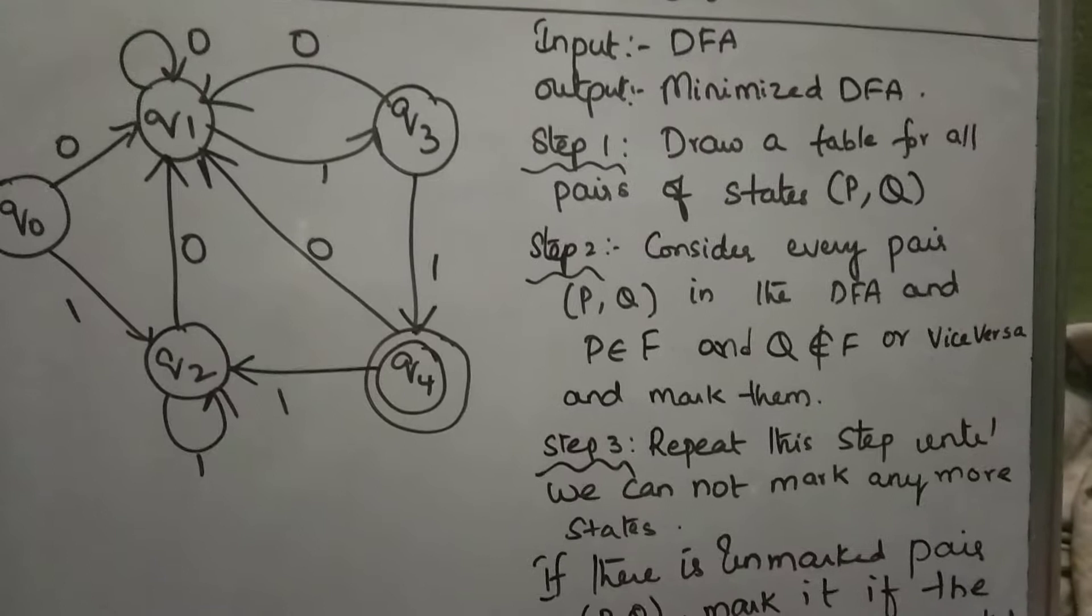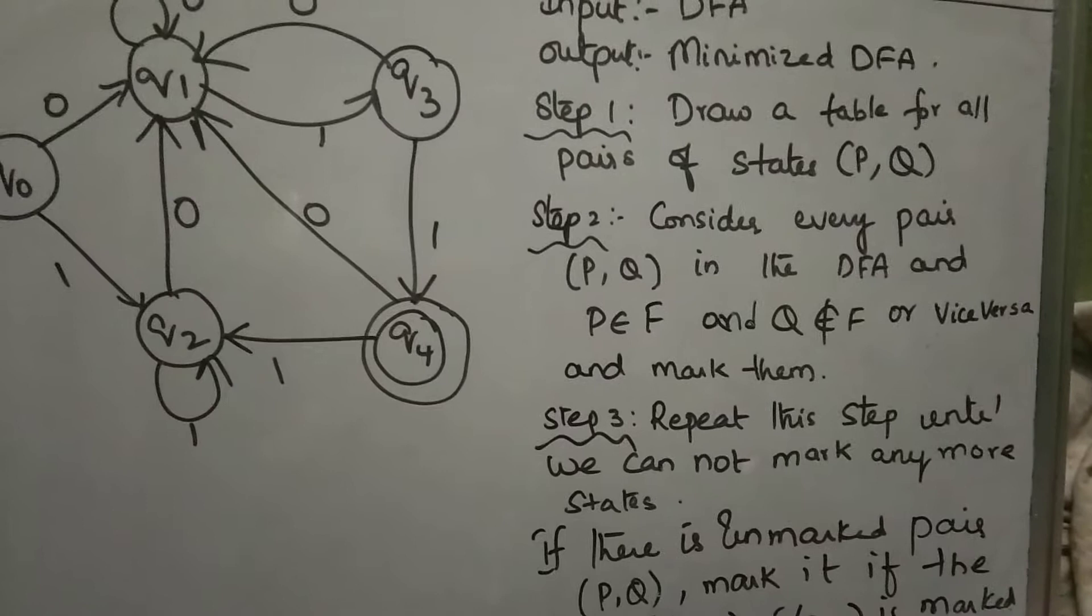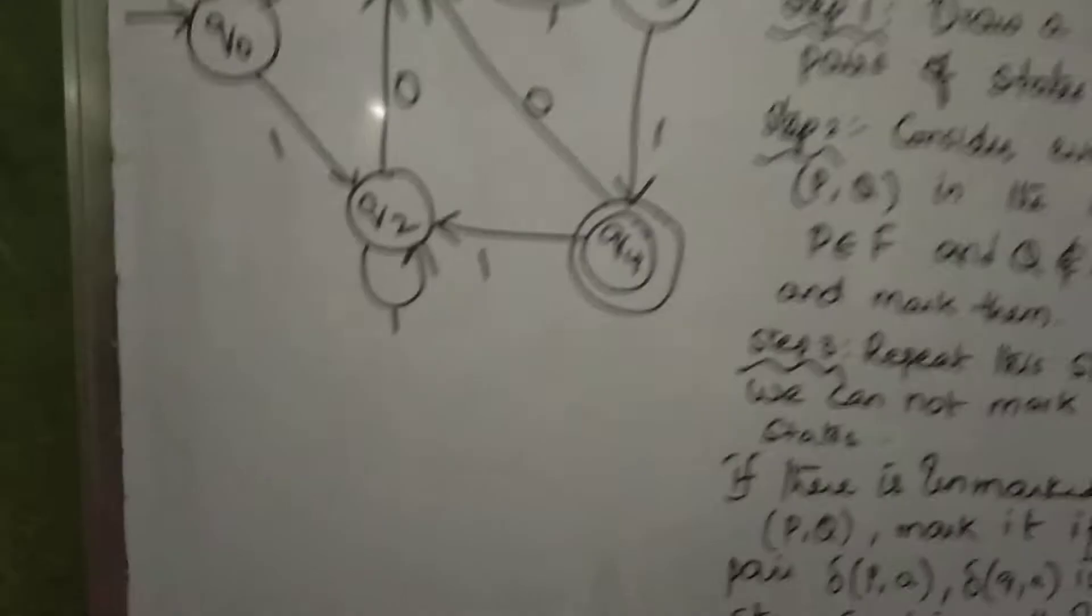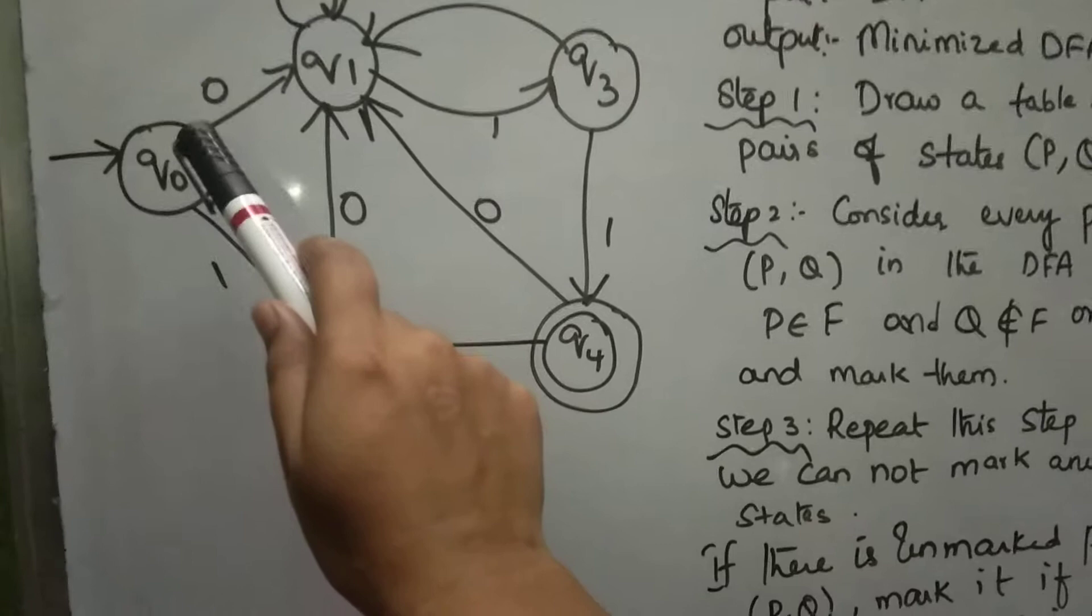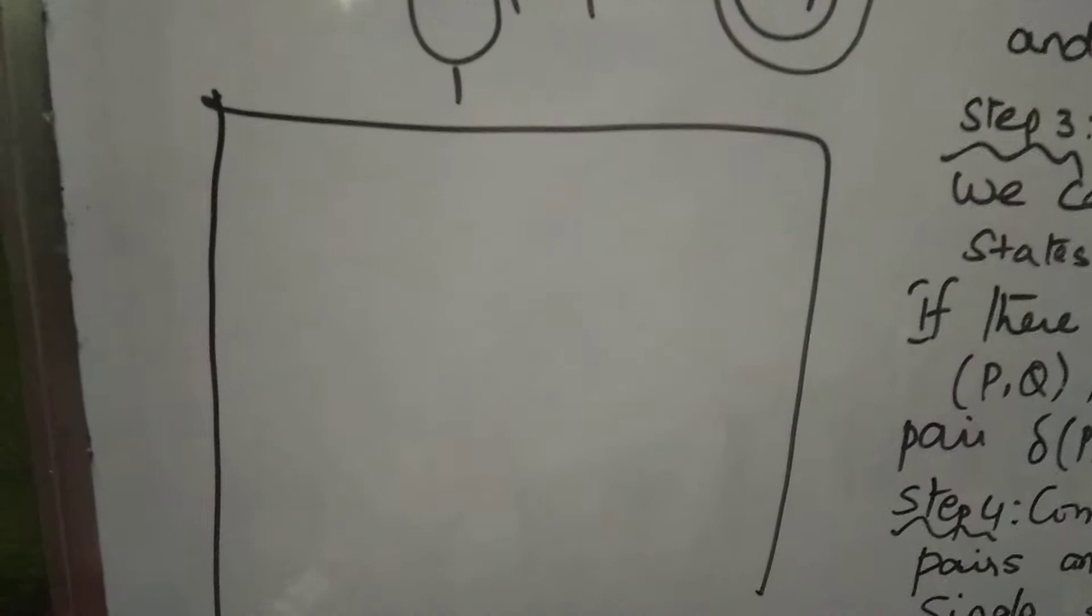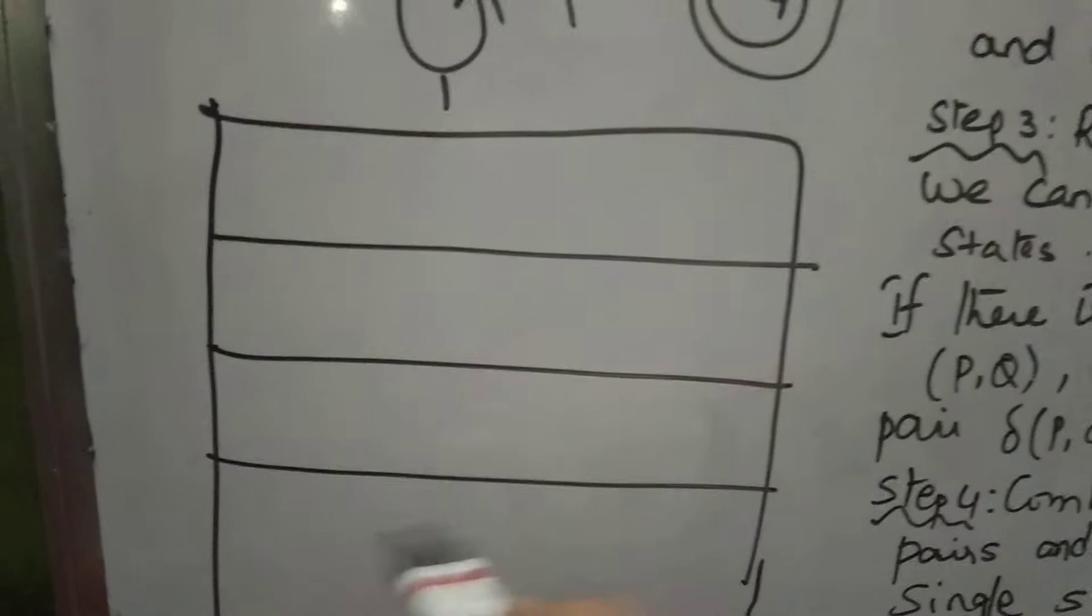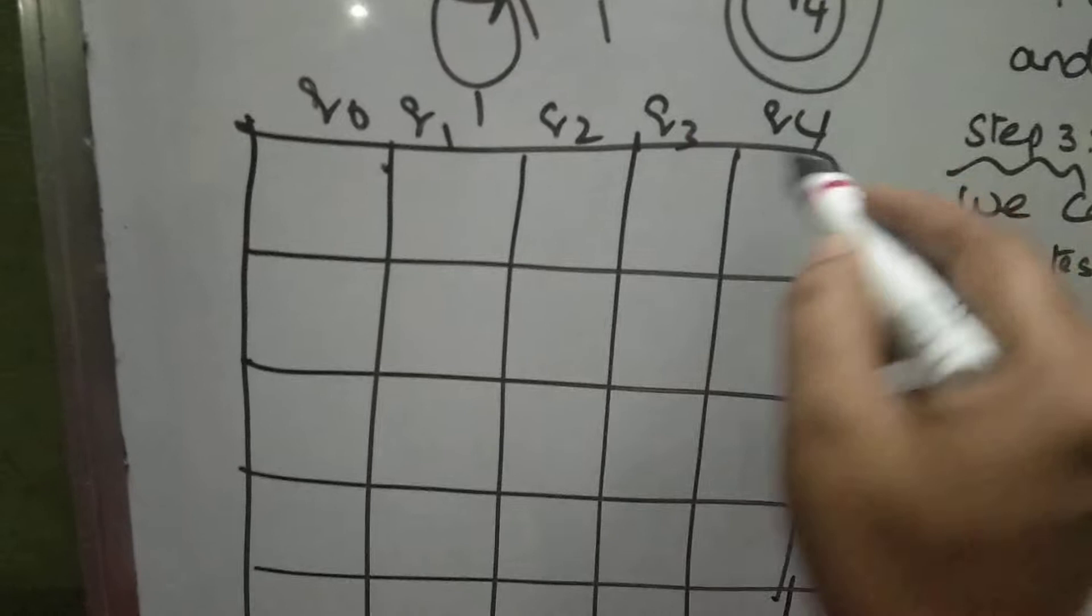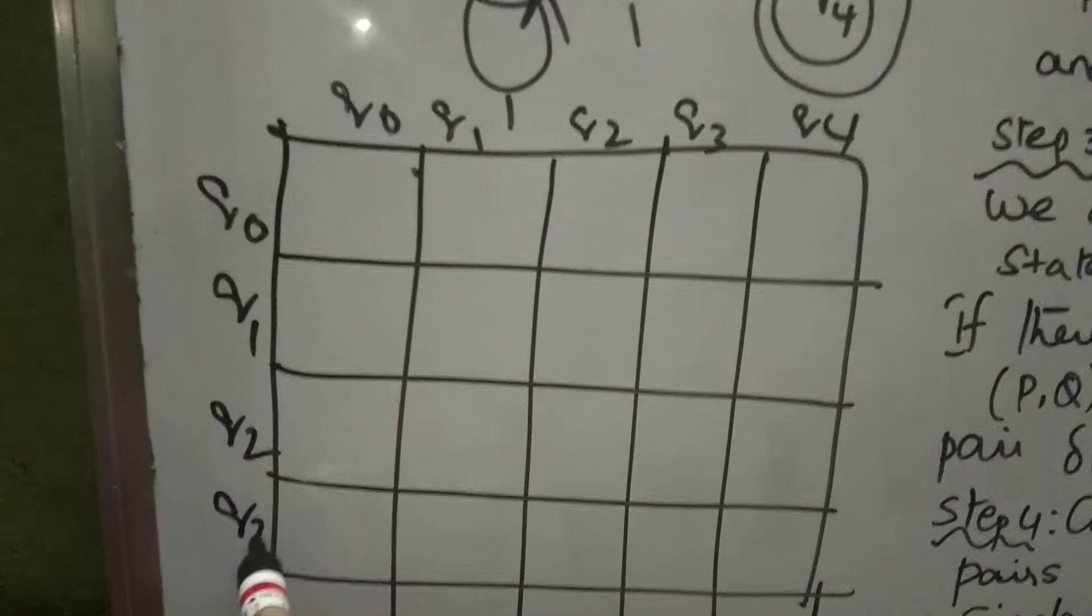For minimization of finite automata, you have to draw a table corresponding to all states. First we draw the table - we have Q0 to Q4. First we draw a square table, then we will remove some cells. Q0, Q1, Q2, Q3, Q4.